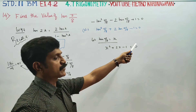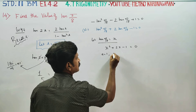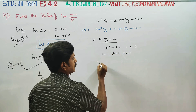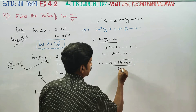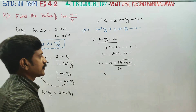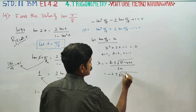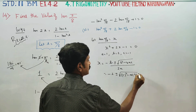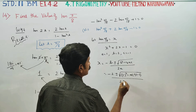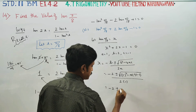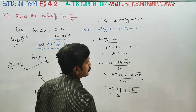We solve using the formula method. Using the quadratic formula: x = (−b ± √(b² − 4ac)) / 2a. Here a = 1, b = 2, c = −1. So x = (−2 ± √(4 − 4·1·(−1))) / (2·1).